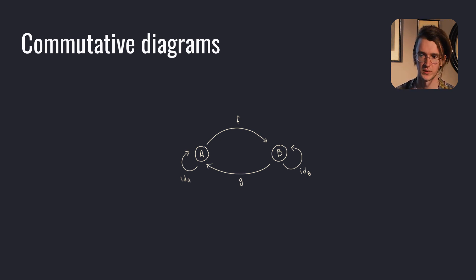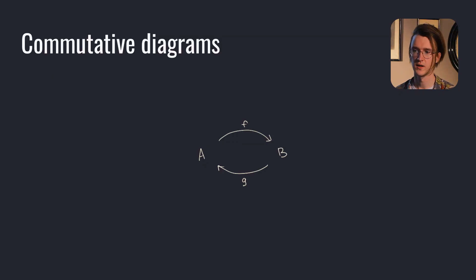All directed paths in the commutative diagram with the same start and end lead to the same result. Make sure to say that diagram commutes every time you see one to get extra points. The identity morphisms are typically not drawn. They always exist and would only add noise to the diagram.